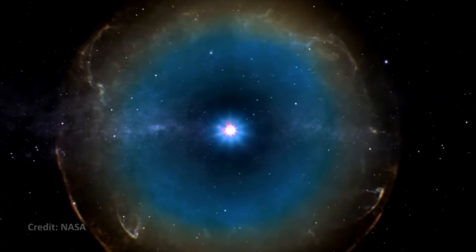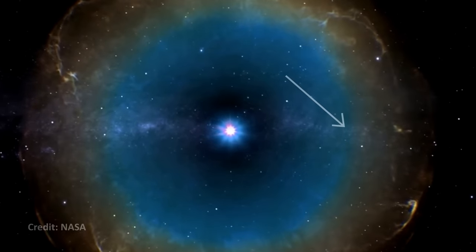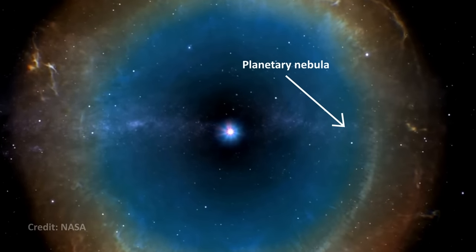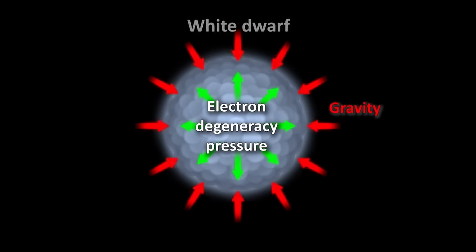But once the helium runs out, the Sun will shed most of its mass, forming a cloud of material called a planetary nebula. Its core however will cool and shrink, leaving behind a small hot ball called a white dwarf.